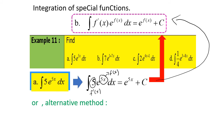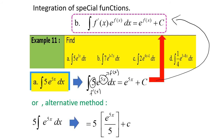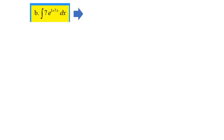Or, alternative method: we may factorize 5 outside the integral symbol, giving 5 times the integral of e^(5x) dx, which equals 5 times e^(5x) over 5 plus c. Simplifying, we get e^(5x) plus c. For part B, when we integrate 7e^(1+7x) dx, we assume 1 plus 7x as f(x). When we differentiate 1 plus 7x, we get 7, so this is f'(x). Applying the rule gives e^(1+7x) plus c.